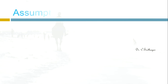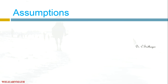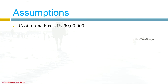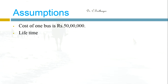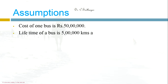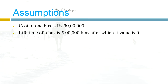Now we have some assumptions. Assume that we are going to run a bus company. That bus company has some buses — each bus costs 50 lakh rupees. The lifetime of a bus is five lakh kilometers, after which its value is zero.